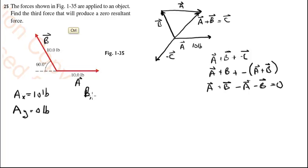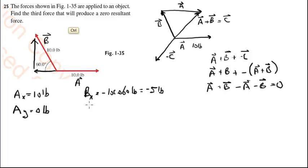For vector B, the X component is in the second quadrant, so it's negative cosine of 60 degrees times 10 pounds. Cosine of 60 is one-half, so that's minus 5 pounds. The Y component of B is 10 times sine of 60, which is positive since it's in the second quadrant. Sine of 60 is 0.866, so 10 times that is approximately 8.7 pounds.